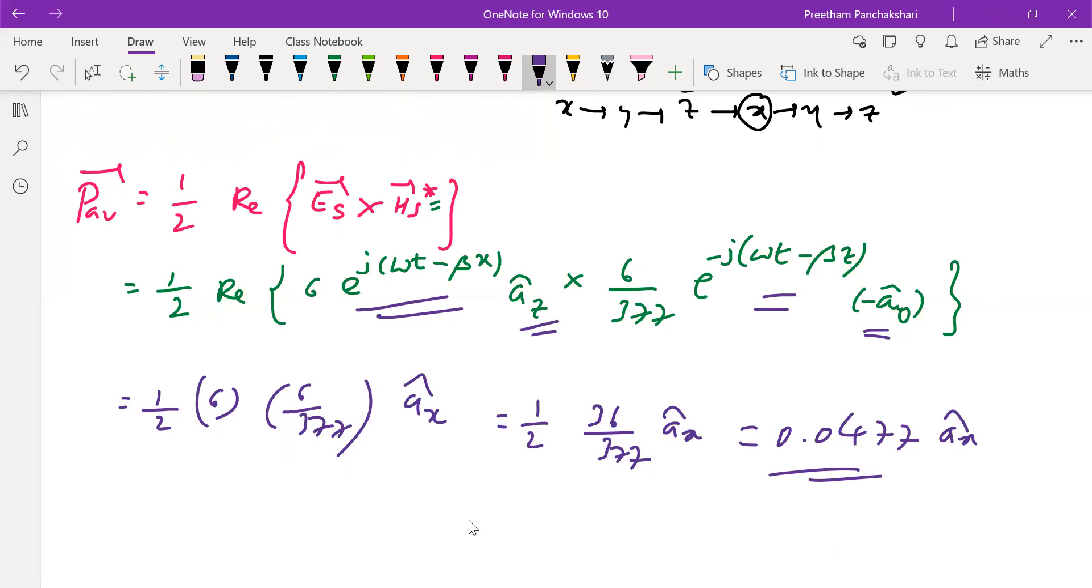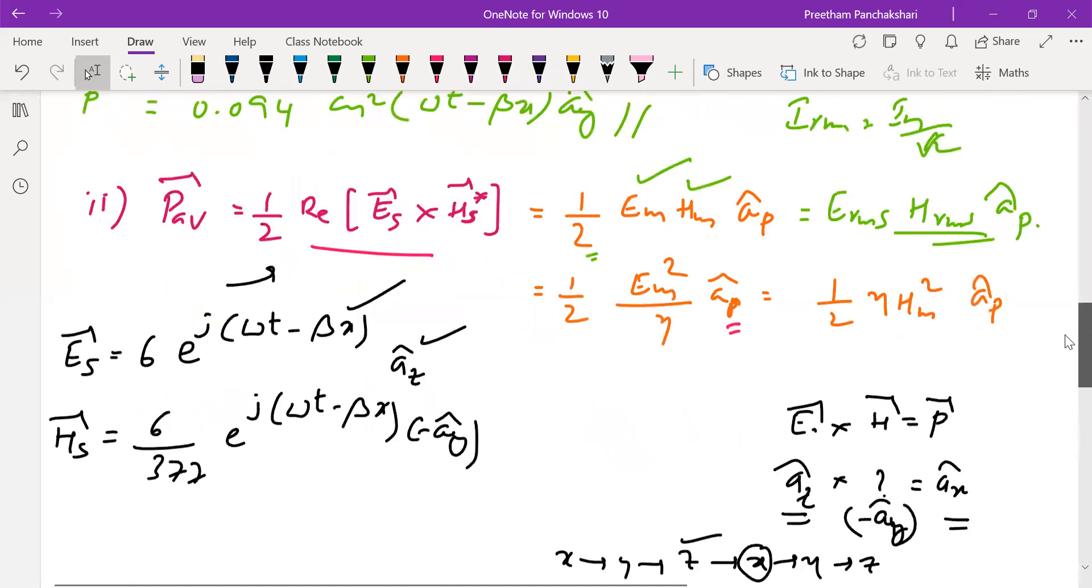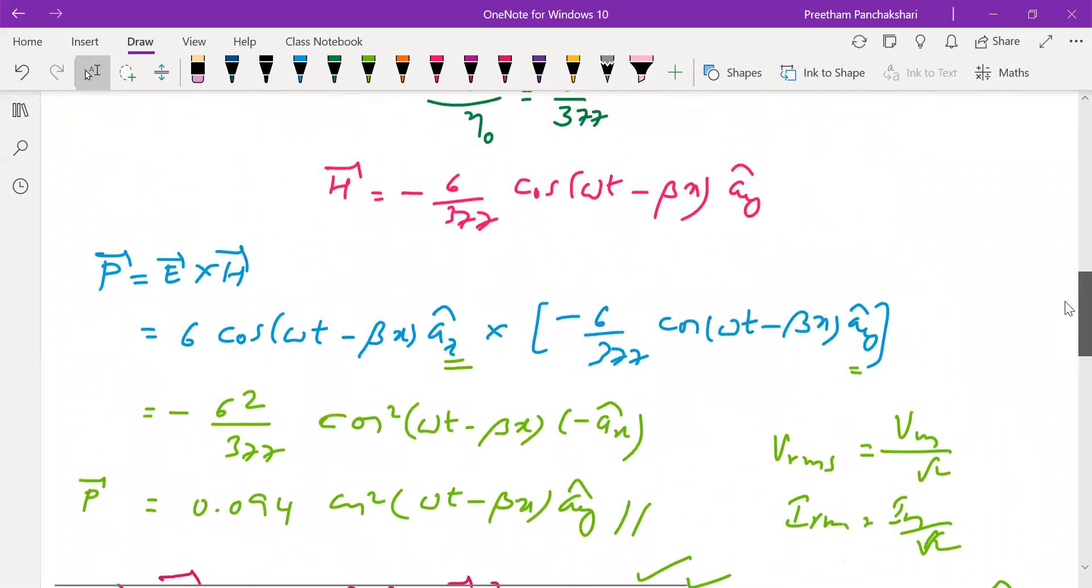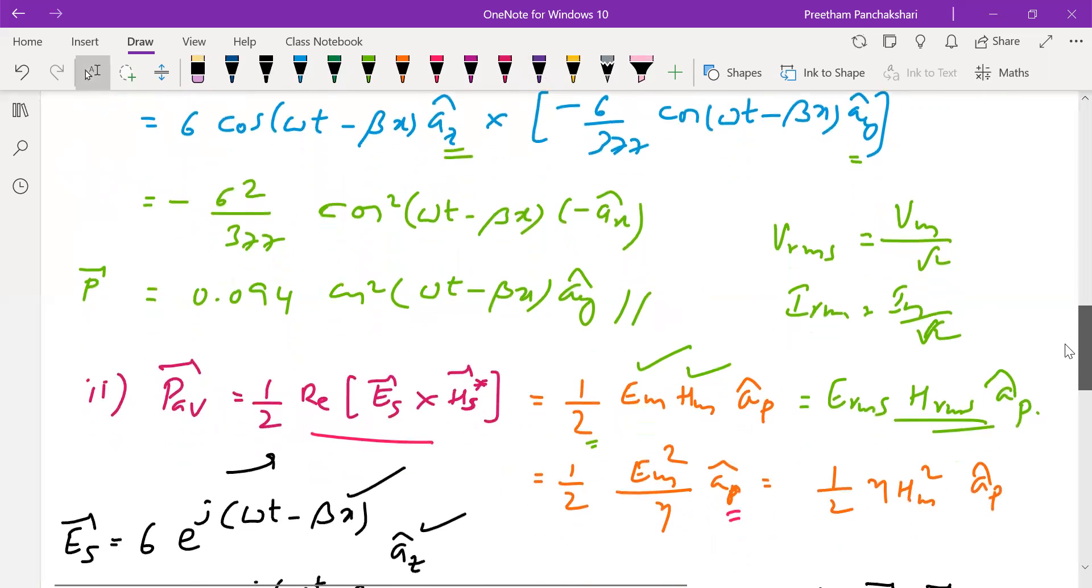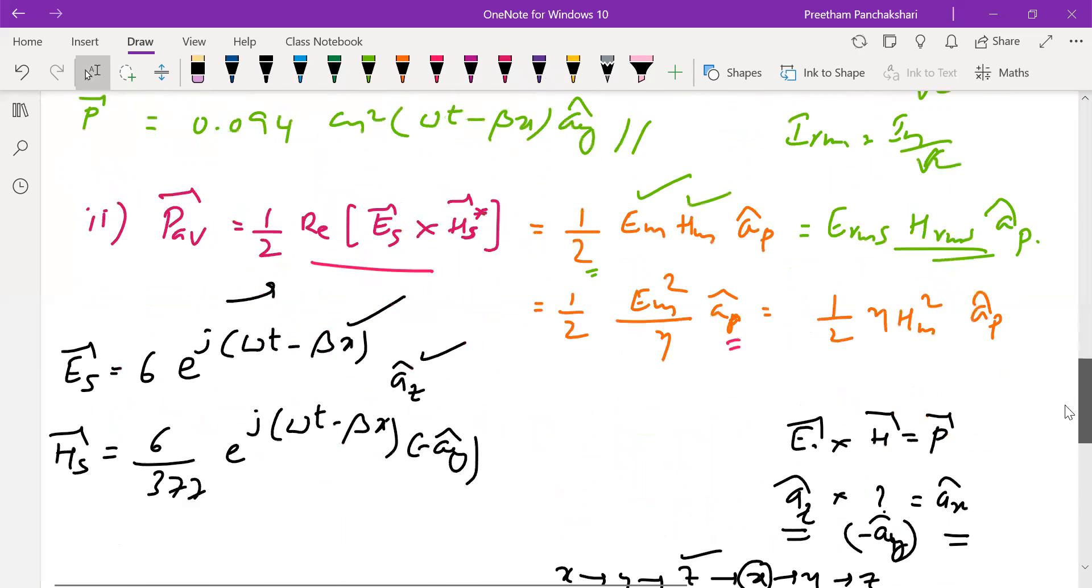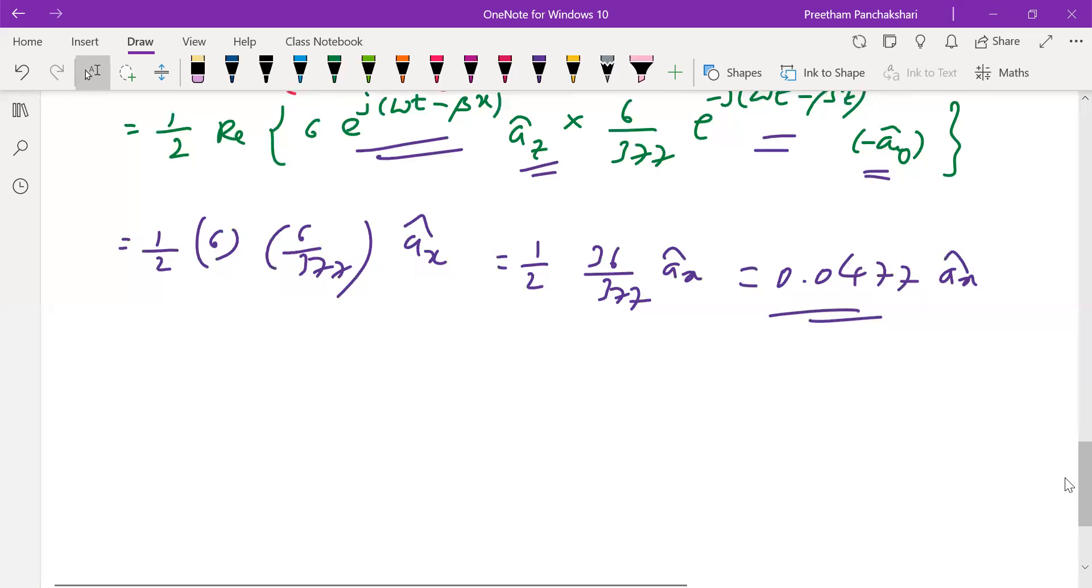Previously, the instantaneous one, 1/2 was not there. Comparison: along with that, cos² term will be there. See here. After taking average, the cos term or ωt term will be eliminated. That is the solution of this problem.